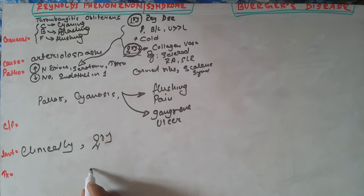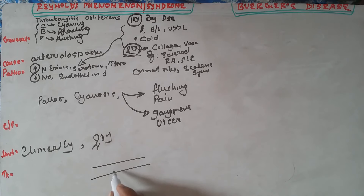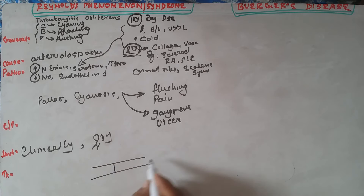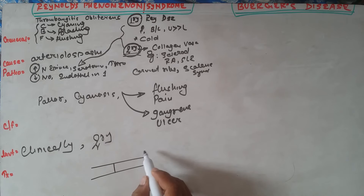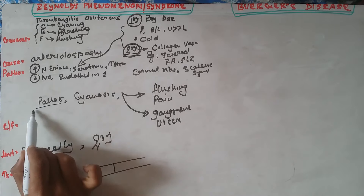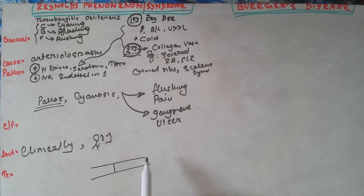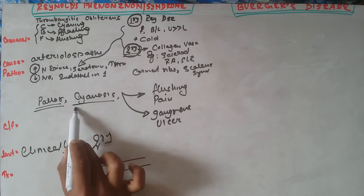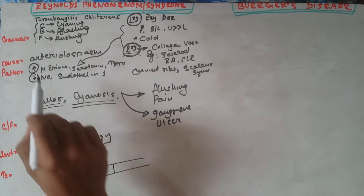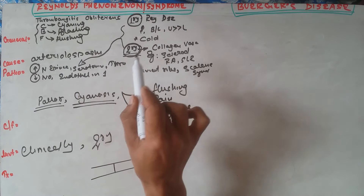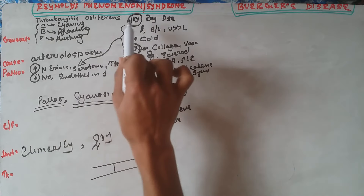During arterial spasm there is no blood supply to the distal portion of the limb. As a result there will be presence of ischemia, which will be presented as pallor — that is the first feature. Then once the deoxygenated hemoglobin in the distal portion is elevated, that will be presented as cyanosis, which is the second component. After the stimuli has been removed, the arterial spasm resolves.